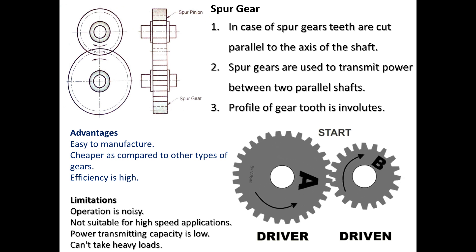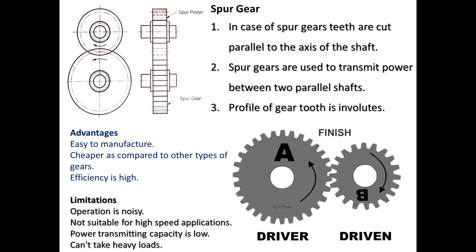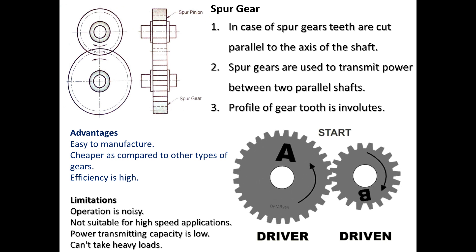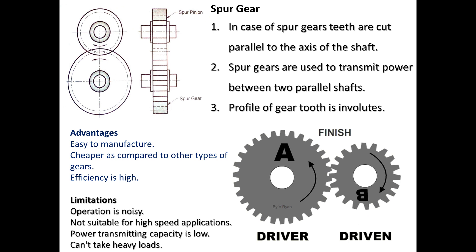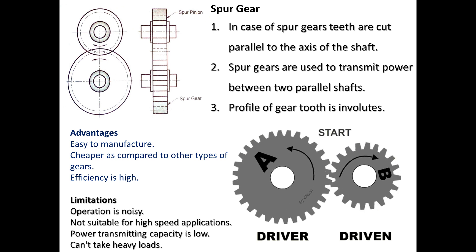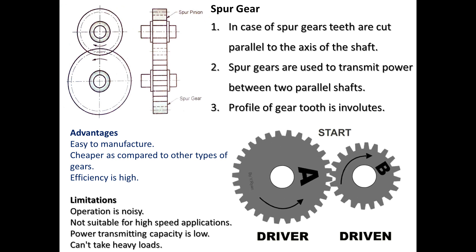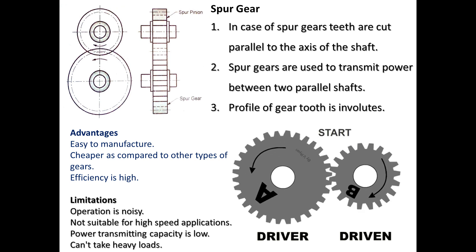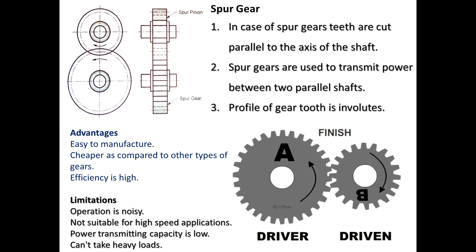Spur gear drives are the most commonly used gear drives. In spur gears the teeth are parallel to the axis of the shaft. Spur gears are used to transmit power between two parallel shafts, and the most common tooth profile on a spur gear is involute. We may have two types of gear tooth profiles: either involute or cycloidal. The advantages of spur gear drives are that they are easy to manufacture, cheaper compared to other gear types, and the efficiency is comparatively high.